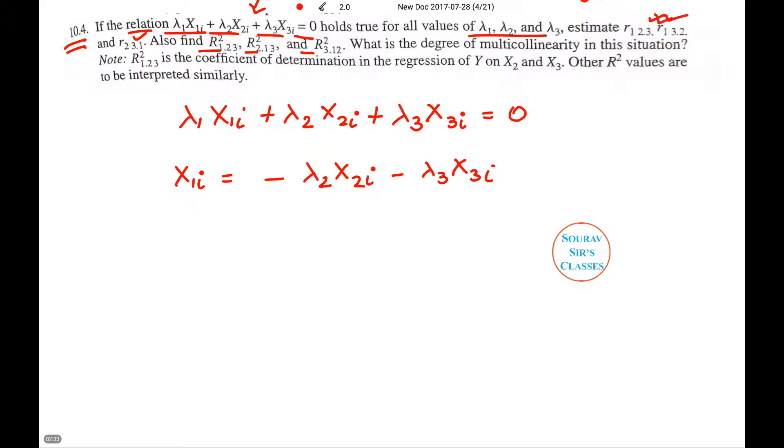Lambda 1 and lambda 1. Now I will do this for all, for X₂ᵢ and also for X₃ᵢ. So X₁ᵢ = -λ₂X₂ᵢ/λ₁ - λ₃X₃ᵢ/λ₁. Then X₃ᵢ will be minus X₁ᵢ minus lambda 2, X₂ᵢ by lambda 3 and lambda 3.